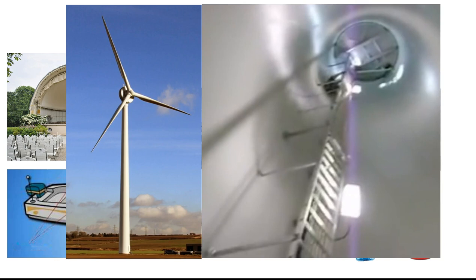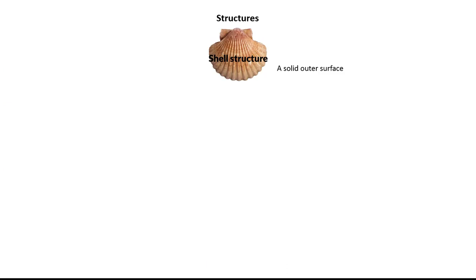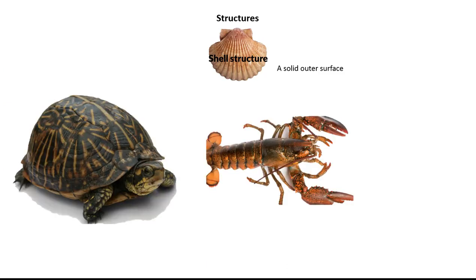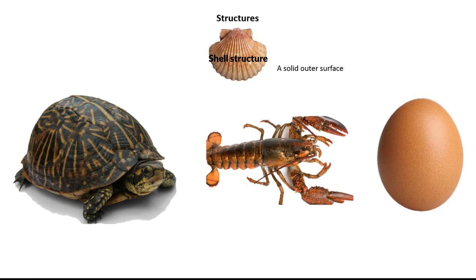If it were solid, like a hydropole for example, then that would be called a solid structure. Now let's not forget living things. The turtle shell and lobster shell are shell structures, as also is an egg.